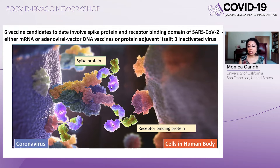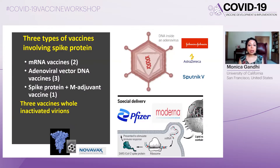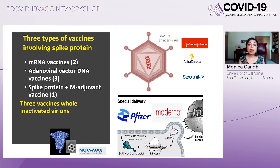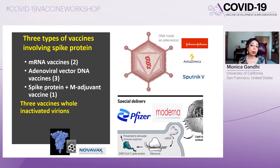The three other candidates are whole inactivated virions. Of the spike protein vaccines, we have the Moderna and Pfizer vaccines, which are both mRNA vaccines surrounded by a lipid nanoparticle. There are three adenovirus vaccines with DNA coding for the spike protein: Johnson & Johnson, Sputnik V, and AstraZeneca from Oxford. The Novavax is the spike protein itself. The three whole inactivated virion vaccines are the Covaxin, Sinopharm, and Sinovac.